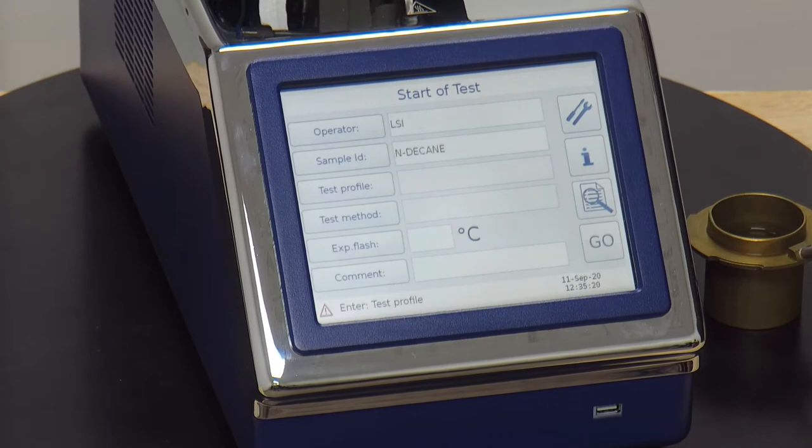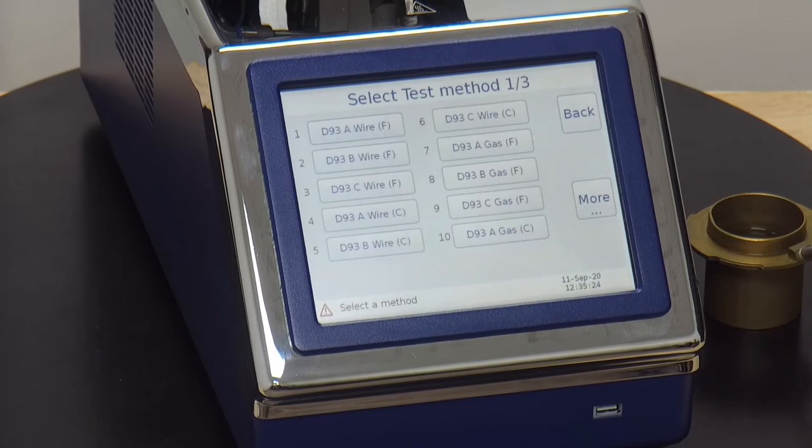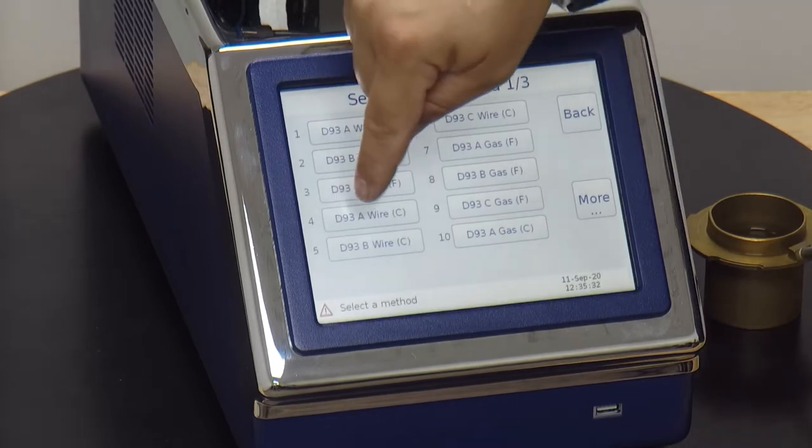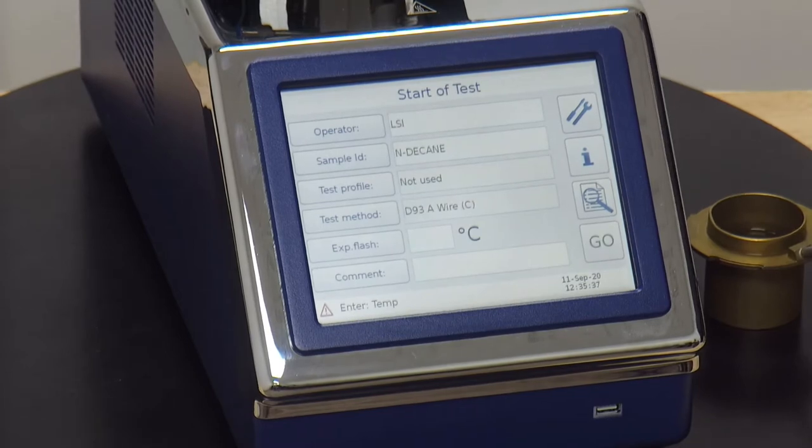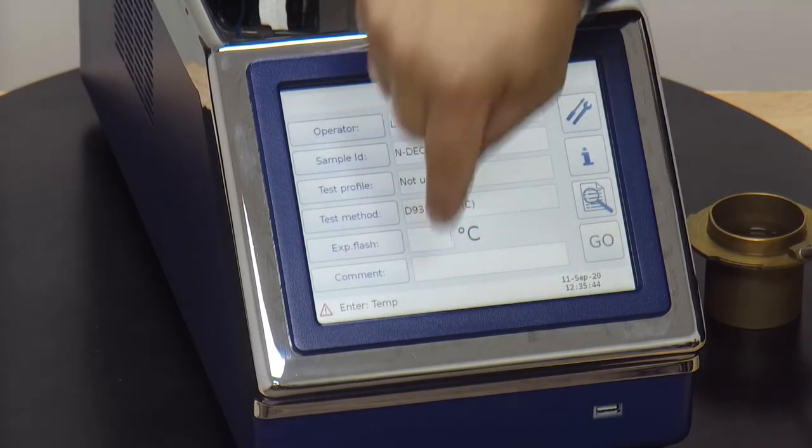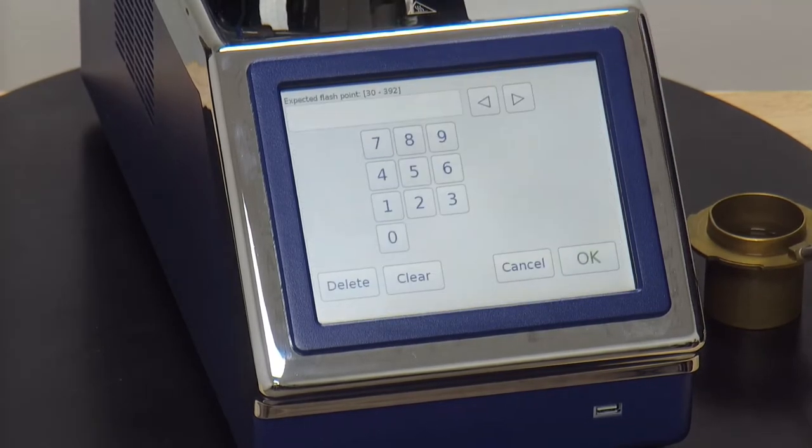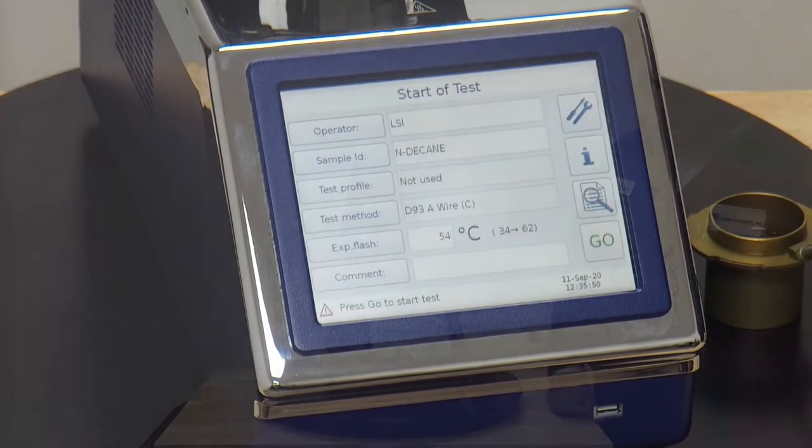At this point we'll skip over test profile and head to test method. We will select D93A method for wire and we will run this one in Celsius. So we'll select D93A wire, C. At this point we'll put in the expected flashpoint for your sample. Your sample needs to be at least 26 degrees below the expected flashpoint for it to start. Press OK.